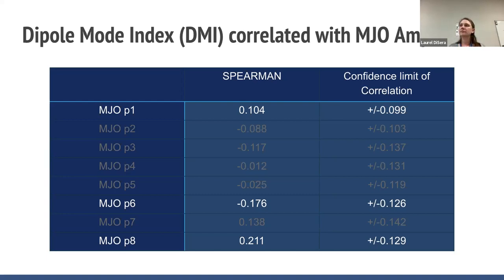Phase eight and phase one have positive correlations, which is what we want for constructive interference with the IOD. It would be nice to see something in terms of not just the phase but the magnitude of the IOD — to be able to say something about the magnitude of the event. We don't know of any operational forecast system for the magnitude of a La Niña event that's going to happen. So that's another related prediction question.